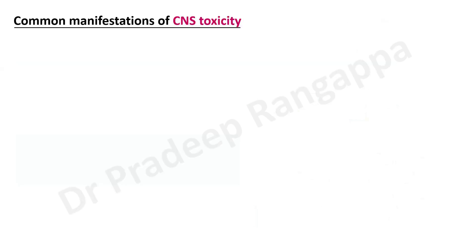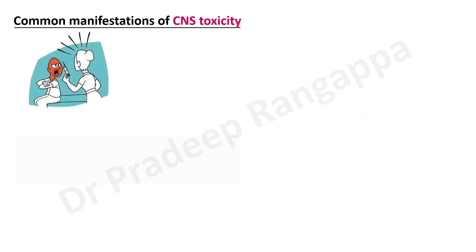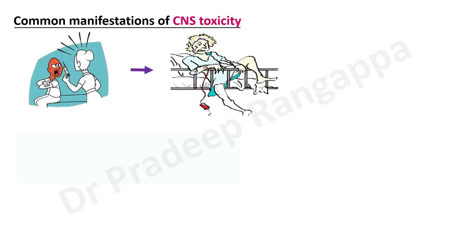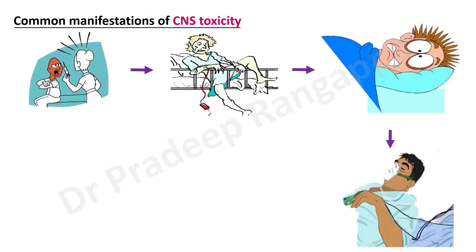The common manifestations of CNS toxicity: agitation is the most common initial manifestation; as it becomes more severe, patients progress to delirium, then stupor, and then coma. This is the typical spectrum we see in the ICU — someone presenting with toxicity initially in a state of agitation, moving to delirium, becoming stuporous, and then comatose.